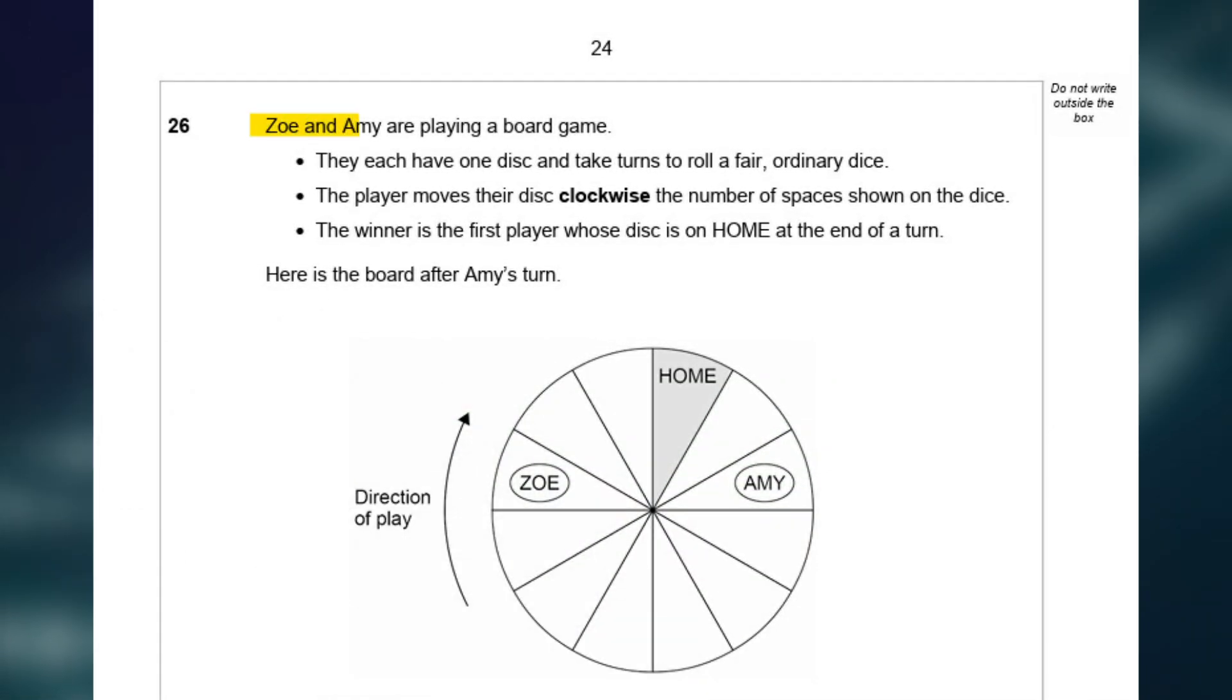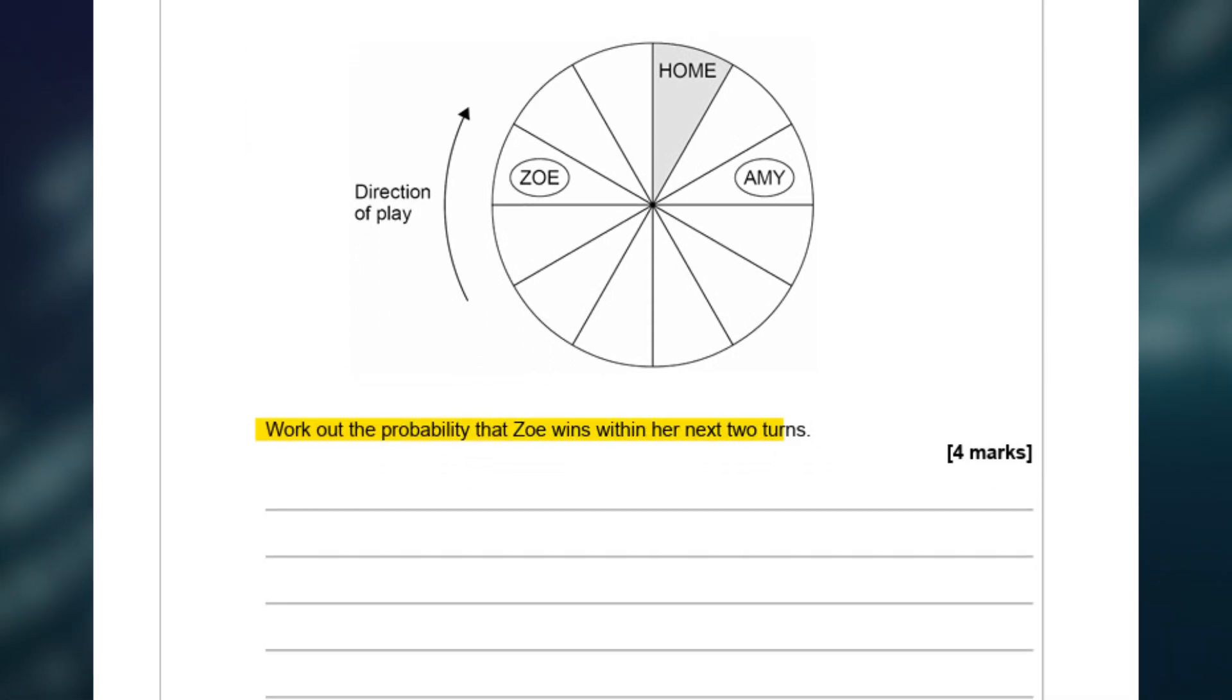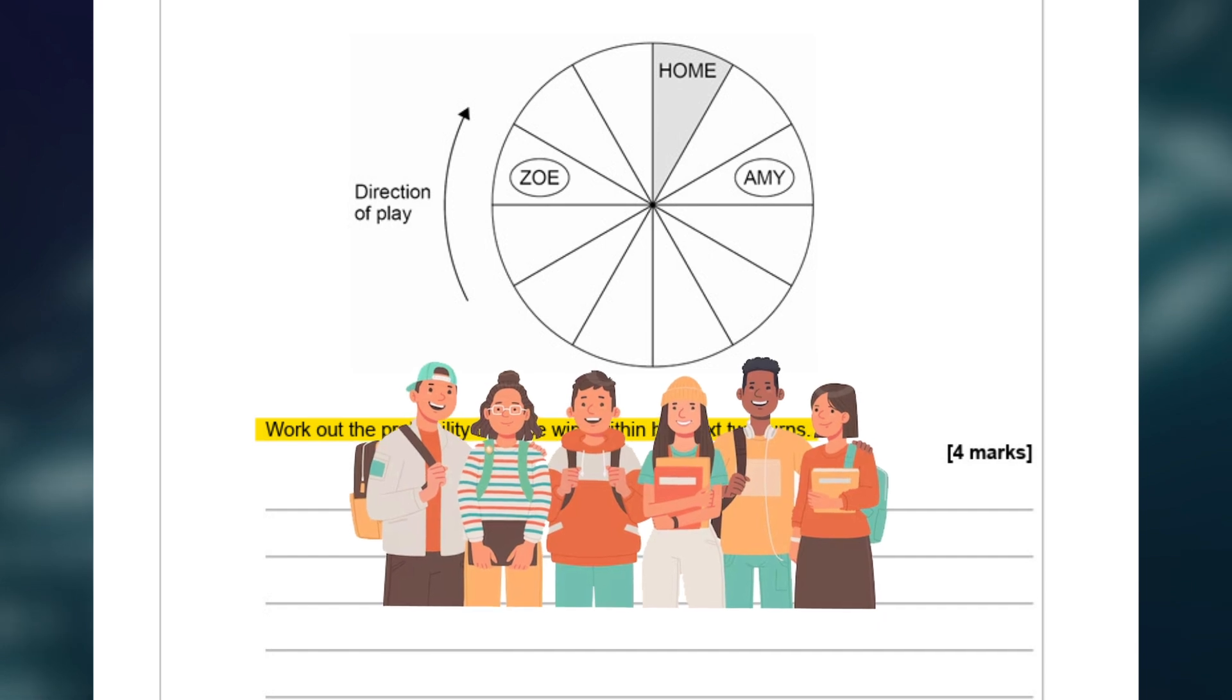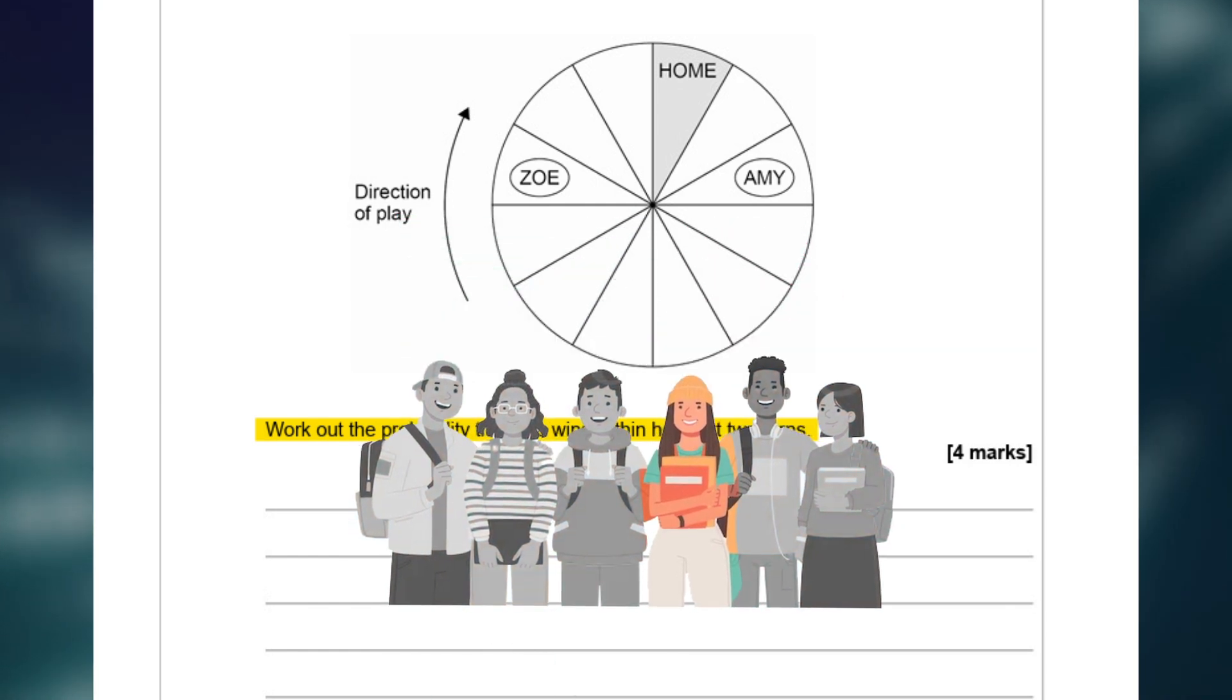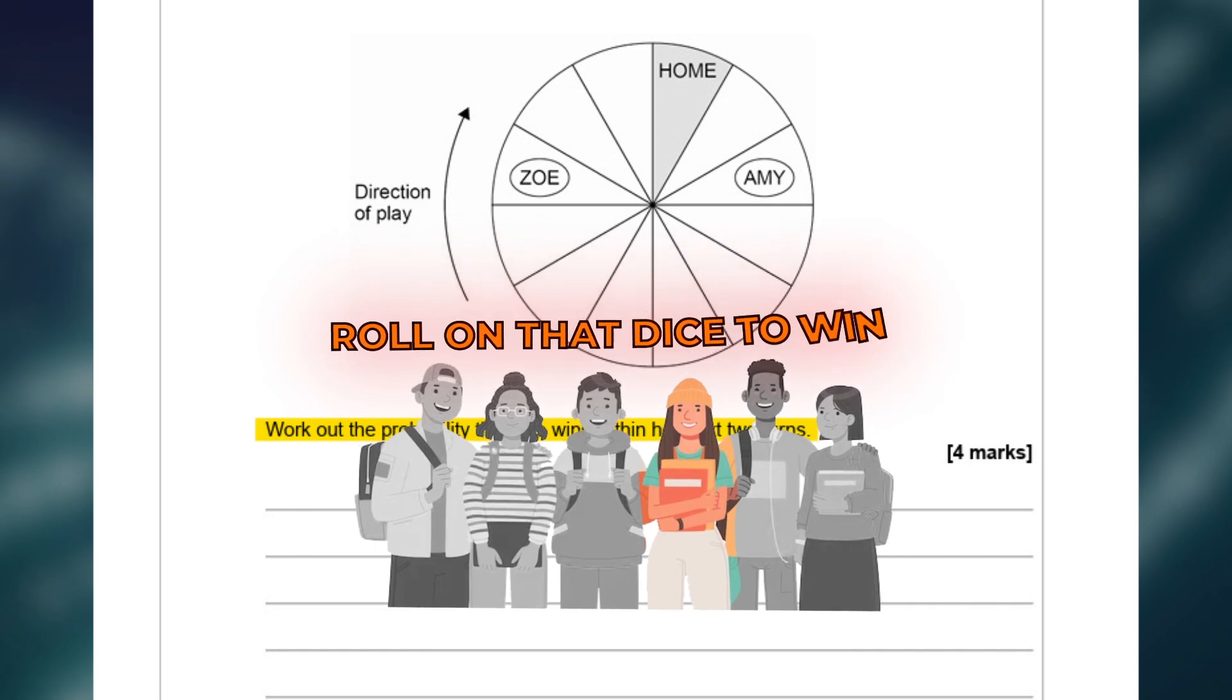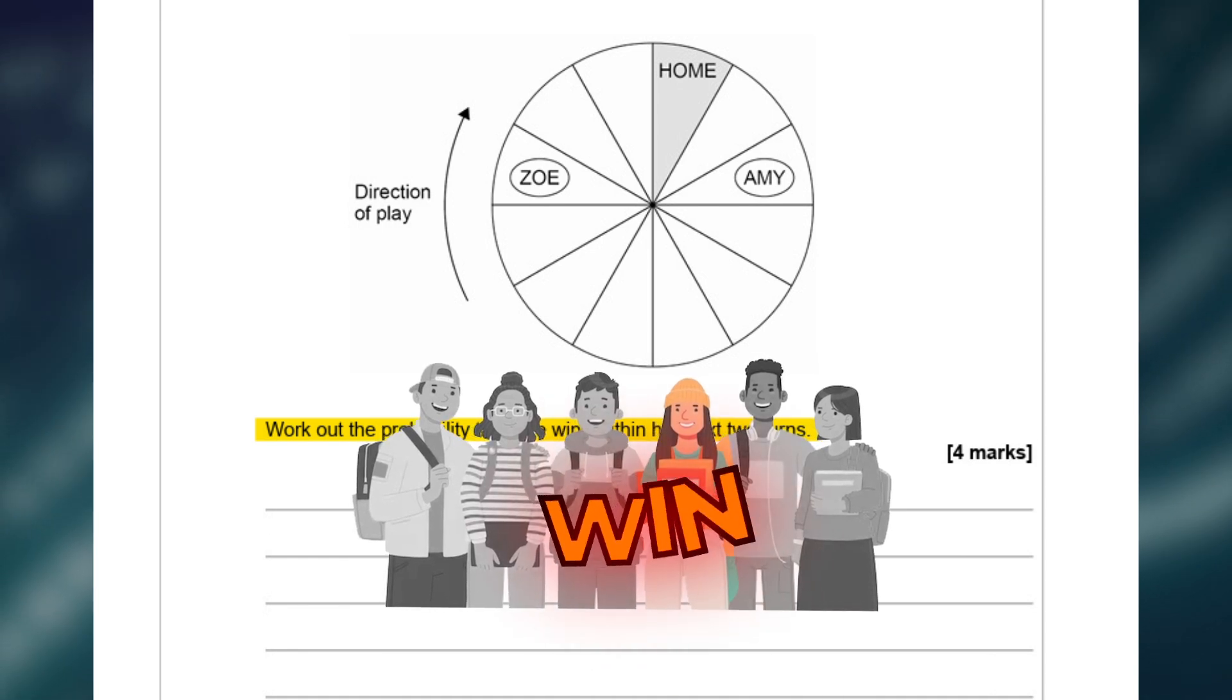This is the question and it reads, Zoe and Amy are playing a board game. They each have one disc and take turns to roll a fair, ordinary dice. The player moves their disc, clockwise the number of spaces shown on the dice. The winner is the first player whose disc is on home at the end of a turn. Here is the board after Amy's turn and it wants you to work out the probability that Zoe wins within her next two turns for four marks. Let's try and simplify this. Imagine you're with your friends or your family at home playing a board game, let's say Monopoly or Articulate for example because those are two of my favourite games, and pretend that you are Zoe. What do you need to roll on that dice to win? And to win we mean landing on home.